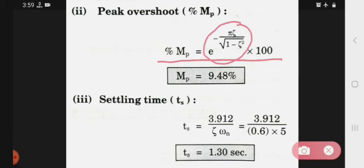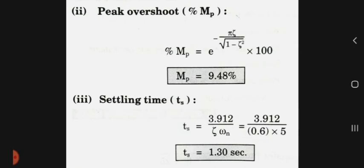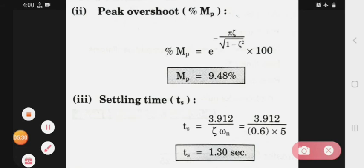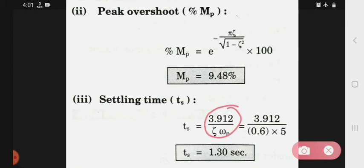That is settling time, that is 3.914/(ζωn), approximately 4/(ζωn). Already we know eta and omega n we have calculated by comparing. So we put both these values, then your settling time will be 1.30 seconds.